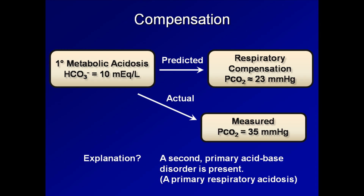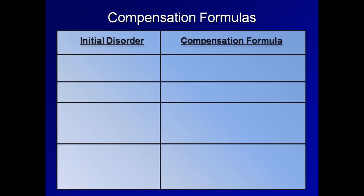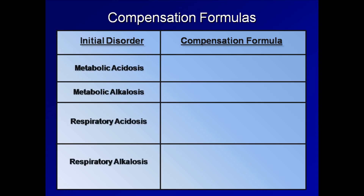Generations of researchers have empirically derived a set of compensation formulas, with a different one for each primary disorder. In fact, there is more than one formula in common usage for each disorder. The following chart represents the formulas most commonly used in the United States. For a metabolic acidosis, the formula is: pCO2 ≈ 1.5 × bicarb + 8. This is known as Winter's formula, named after Robert Winters, a pediatrician from Columbia University who helped derive it in the 1960s.